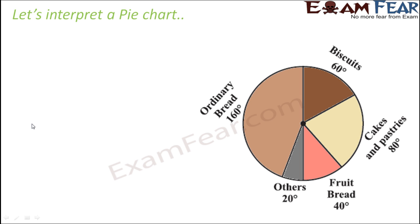So which item is being sold maximum — the sale is maximum for which item? Looking at this pie chart, you see that the brown region is present in the maximum area. So that means the sale of ordinary bread is the maximum.